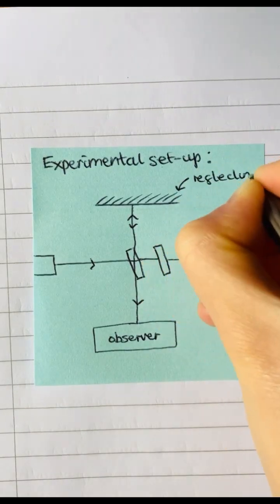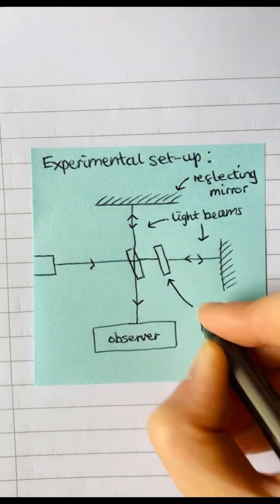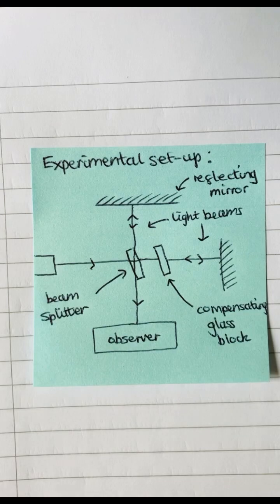Here's the experimental setup. The light beam was split into two and each beam reflected off a mirror before returning to the observer.